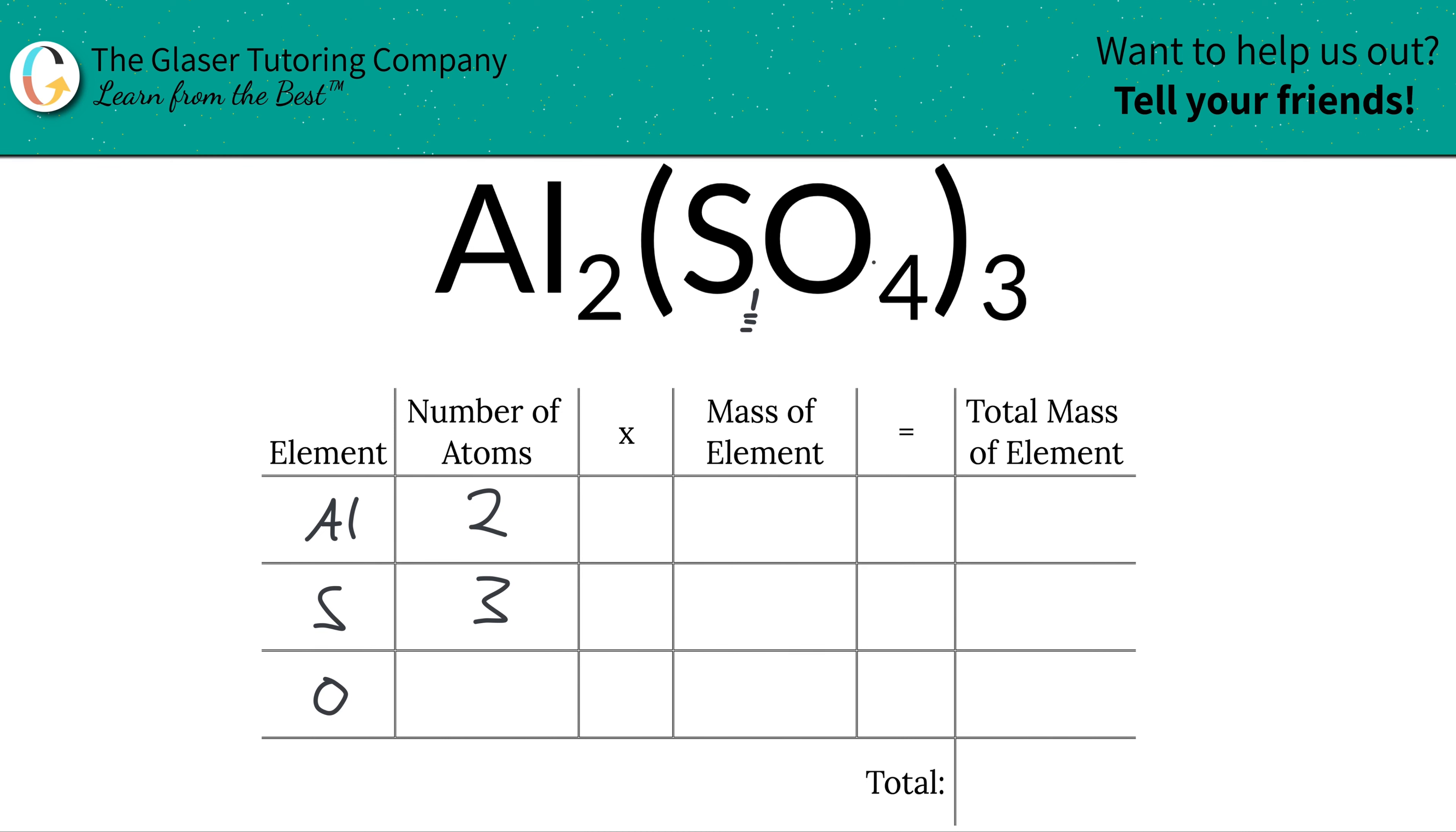Now oxygen, we're simply going to do the same process. We take these subscripts here and we basically multiply them together to find a total of 12. Remember, inside of one sulfate, there's going to be four oxygens, but you have three sulfates. So if you have three of these things and each of them contains four oxygen, then that means that there are 12 oxygen overall.